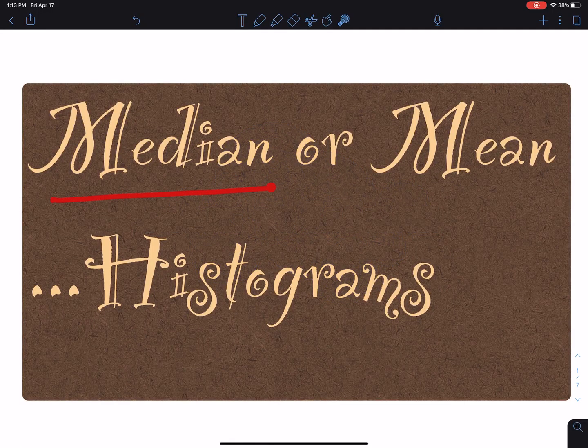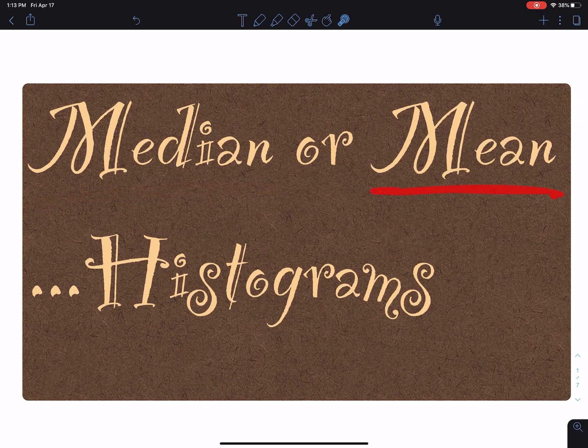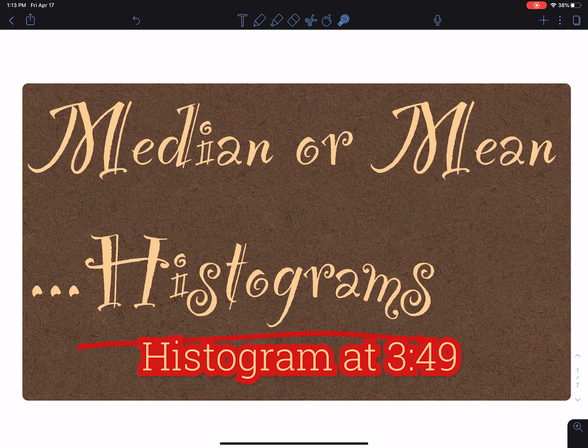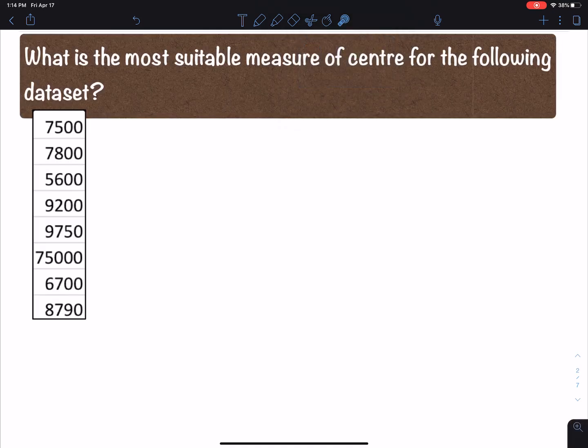Alright you guys, I want to talk about the measures of center and I'm going to talk about the median or the mean and trying to figure out which one is better. Also, I'll talk a little bit about histograms and how to construct them on your calculator. So let's get into it. I want to address the question: what is the most suitable measure of center for the following dataset?